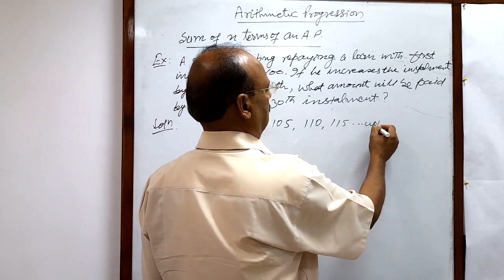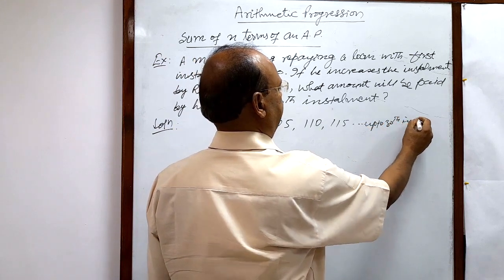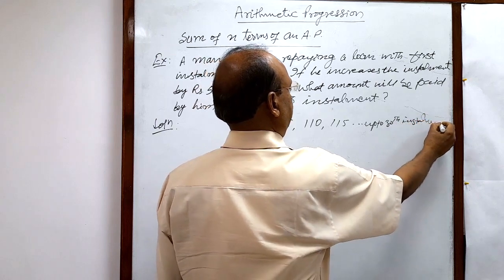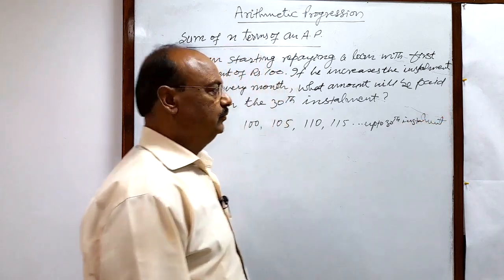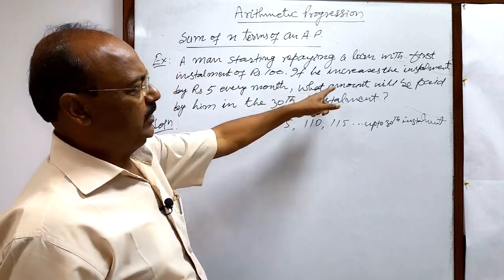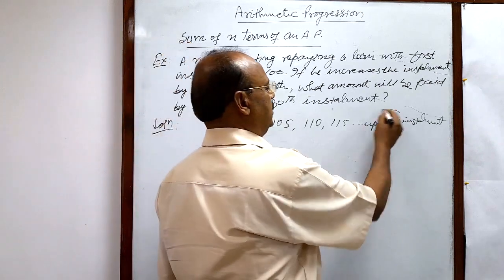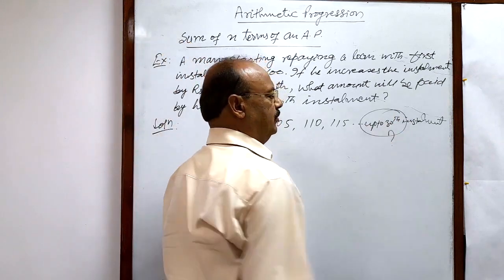Up to the 30th installment, what do we have to find out here? We have to find what amount will be paid by him in the 30th installment.